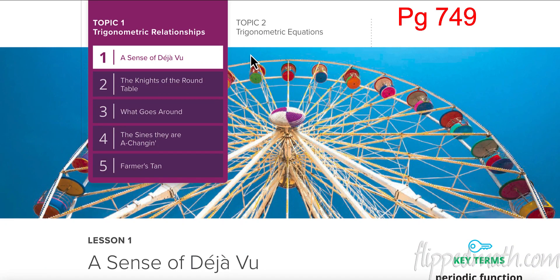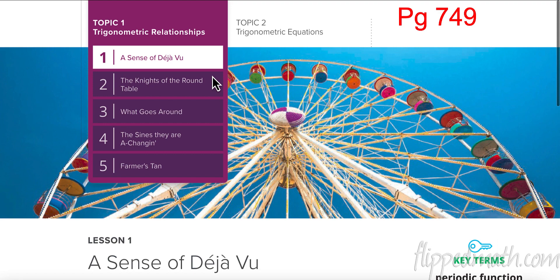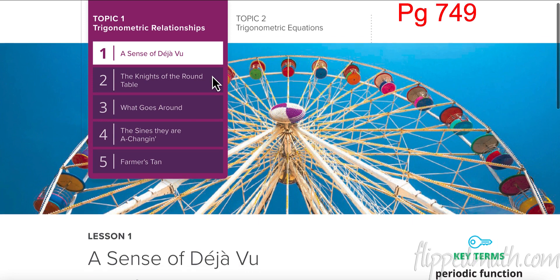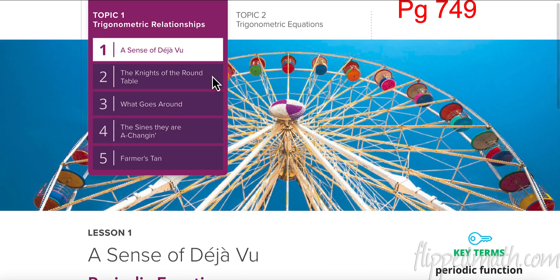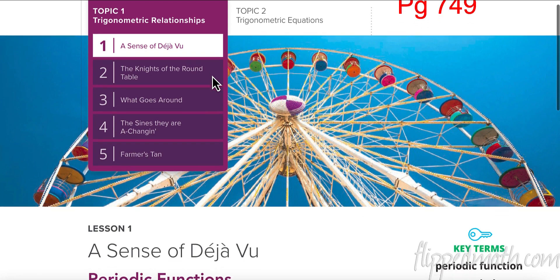Welcome back. We're on page 749, starting Module 4 — trigonometric relationships. This is a little different from what you may remember about sine and cosine from geometry, where it was mostly in a right triangle. We're going to use that information but continue it further and do some more cool things with it.